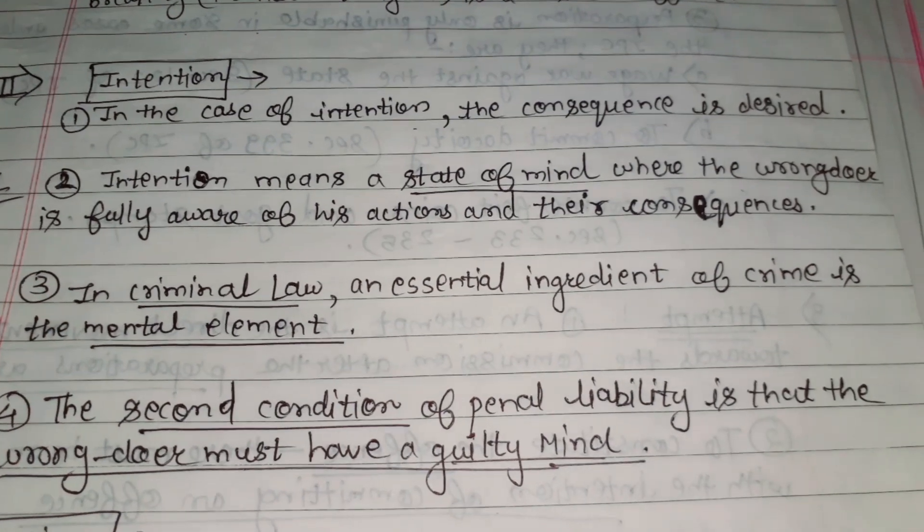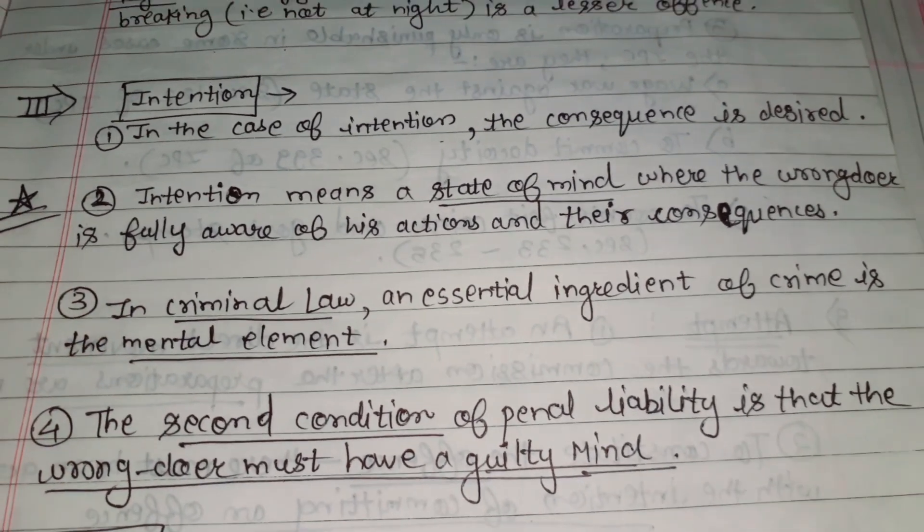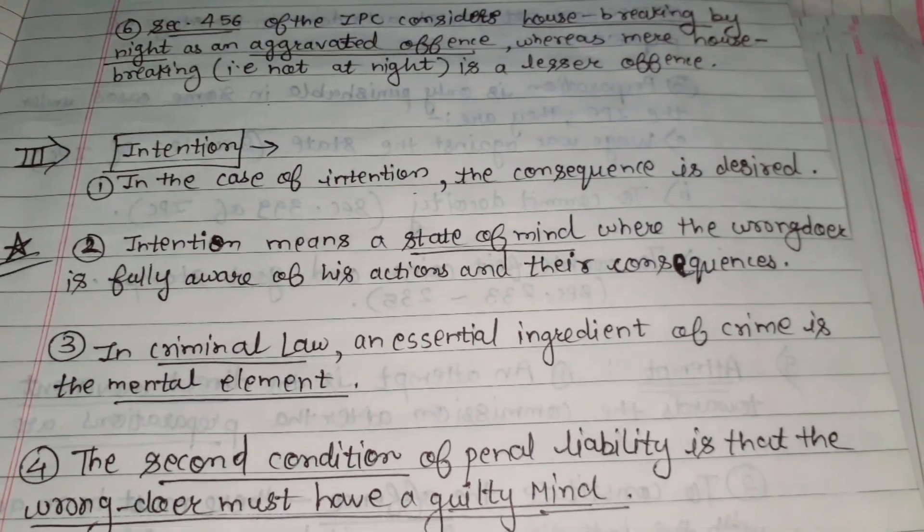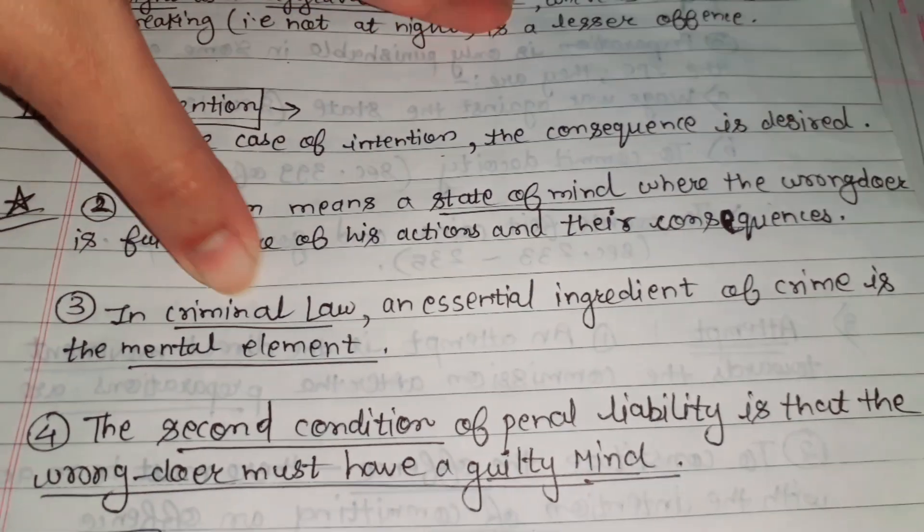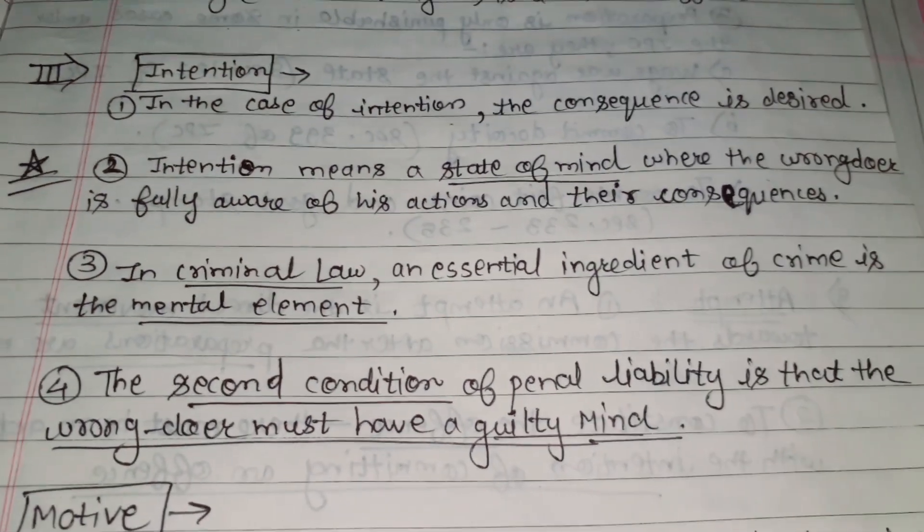Intention means the state of mind where the wrongdoer is fully aware of his actions and their consequences. In criminal law, an essential ingredient of a crime is the mental element. The second condition of penal liability is that the wrongdoer must have a guilty mind.